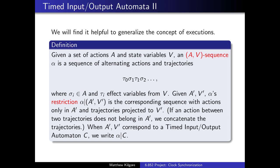Now, we find it helpful to generalize the concept of executions to an AV sequence given a set of actions and state variables. These are sequences of alternating actions and trajectories given different sets of actions and state variables. The restriction of an AV sequence is a new sequence with actions thrown out, trajectories projected, and any isolated trajectories concatenated. When A prime and V prime corresponds to a TIOA C's actions and variables, we write alpha restricted to C.